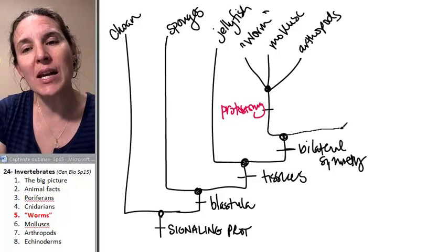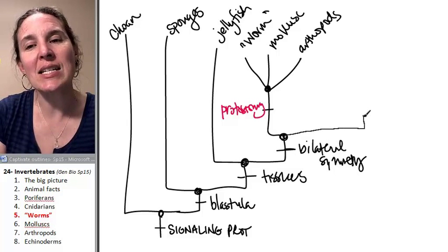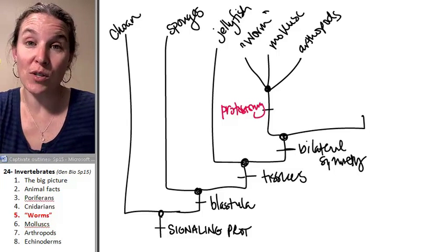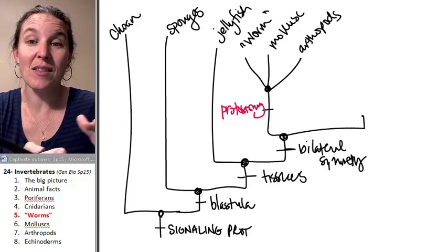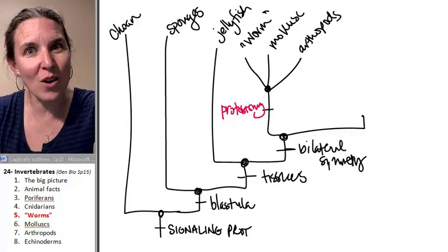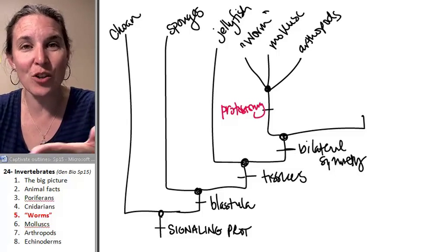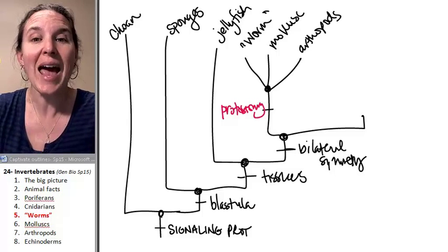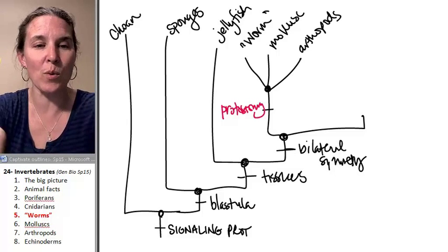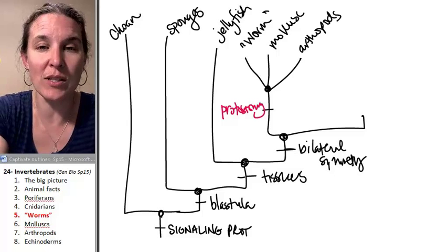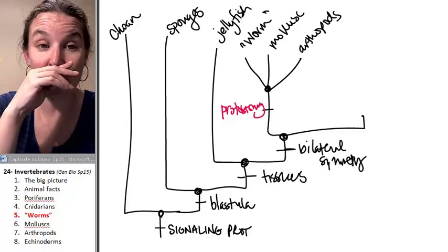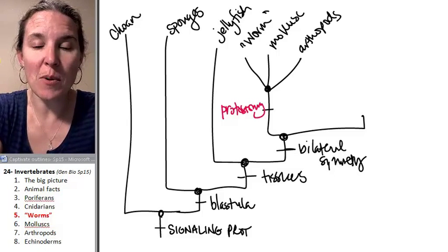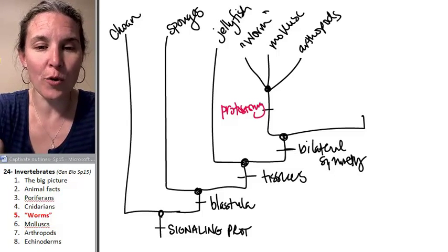You probably have a decent idea that if we're going to break off the protostomes, then we're also going to have a group of deuterostomes, and we will deal with those guys last. So let's talk first about our little worm group.